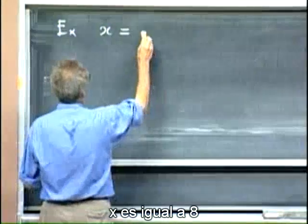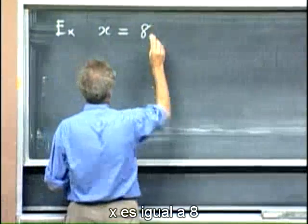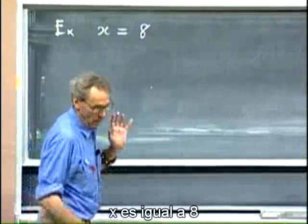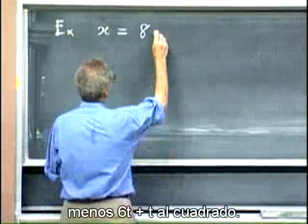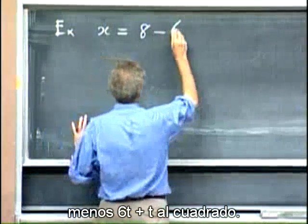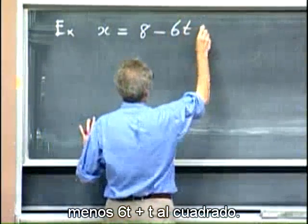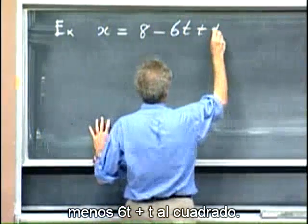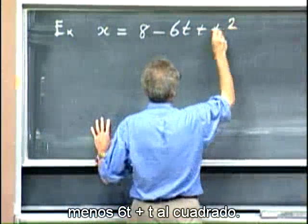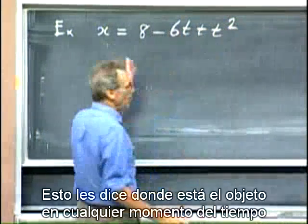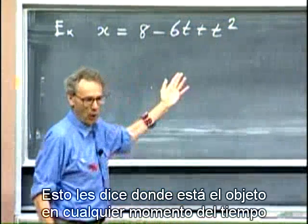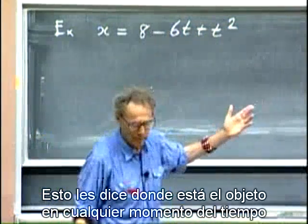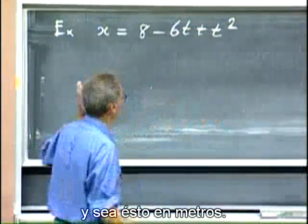x equals 8 minus 6t plus t squared. So this tells you where the object is at any moment in time. And let this be in meters.